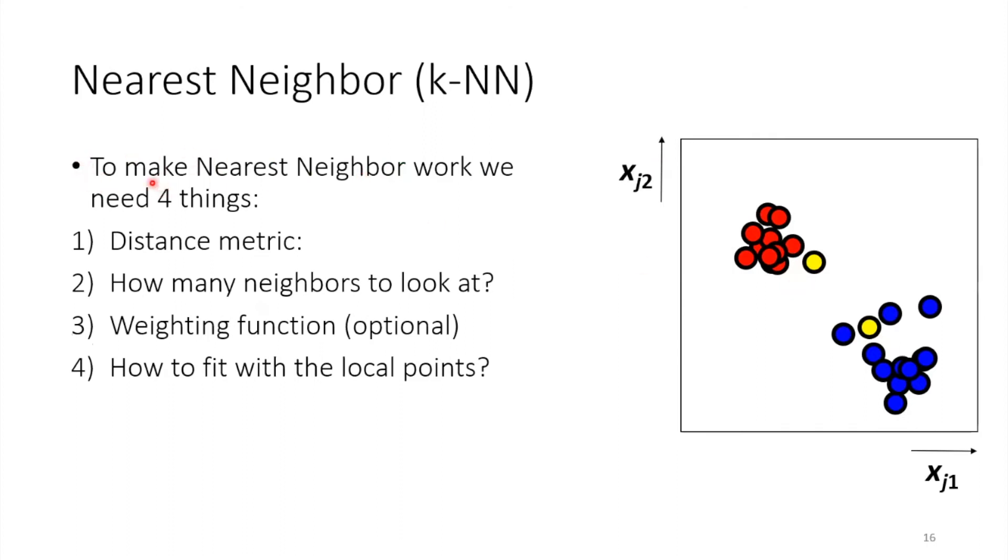To have these nearest neighbor classifiers, there are four things that you need to define. So you need a distance metric. So how do I measure the distance between this point and the other points? How many neighbors to look at? So you can take one, you can take two, you can take 10, you can take 30. We'll talk about the weighting function in a second. And how do you make your decision? So do you take the majority of the vote? Do you take the average of the vote? You need to make a choice here.